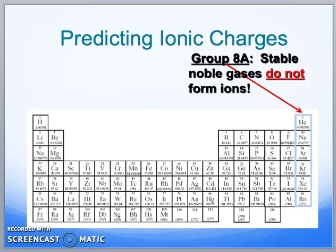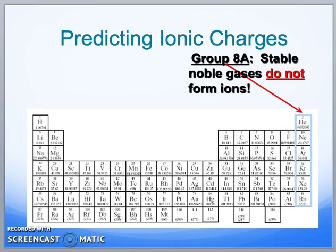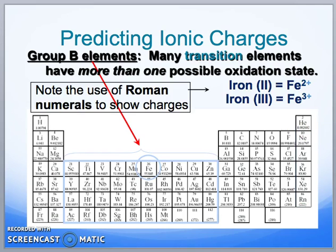Looking back, they all say 'A' after — so we're jumping from Group 1A, 2A, 3A, 4A, 5A, 6A, 7A, 8A. Remember, we're only talking about the Group A elements. Our Group B elements are our transition elements, and many of these use Roman numerals to show their charges because they can vary.